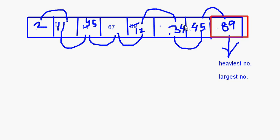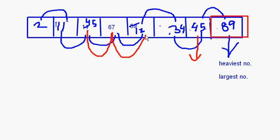In the next looping, we have to consider only up to the second-to-last element. So 2 and 11 are compared — nothing changes. 11 and 45 — nothing. 45 and 67 — 45 is less, so nothing to be done. Then 67 and 12: 12 and 67 swap, so 67 moves right.